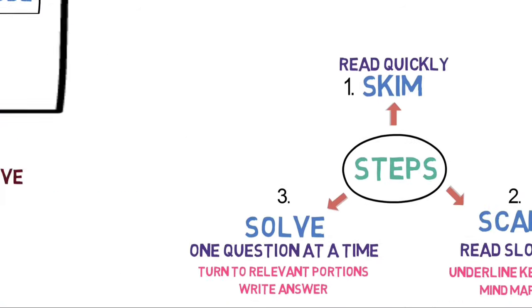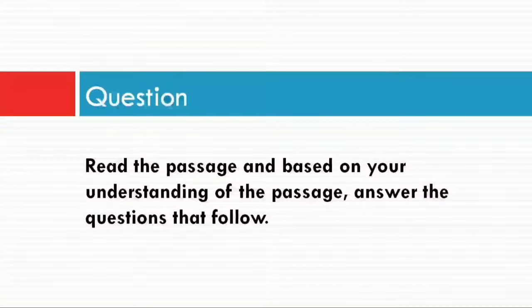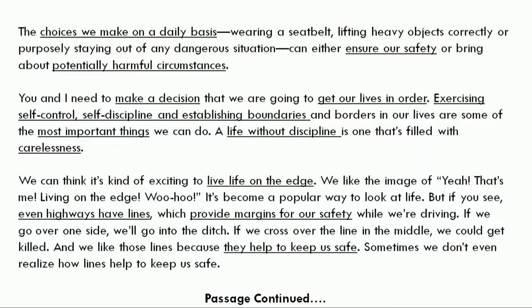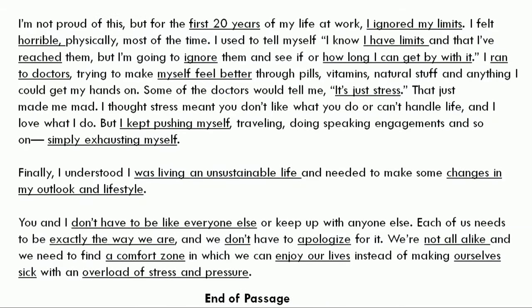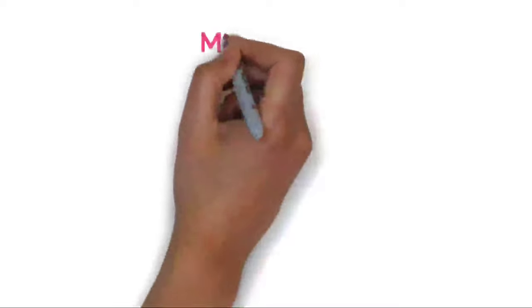Now that you've understood what reading comprehension is, the steps to solve it, and the types of questions, let's look into an example. The question is: read the passage and, based on your understanding, answer the questions that follow. While I go through the slides, please take screenshots and read them carefully — I have already underlined the key points. I hope you have now completed Step 1 (skimming) and Step 2 (scanning) the passage. Now I will be creating a short mind map based on my understanding, as part of Step 2.